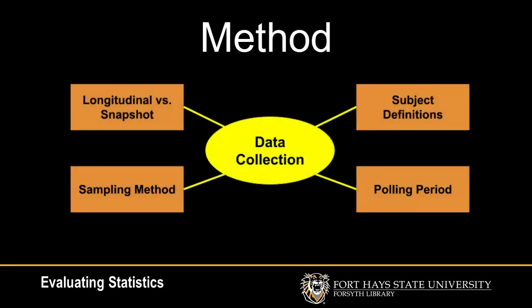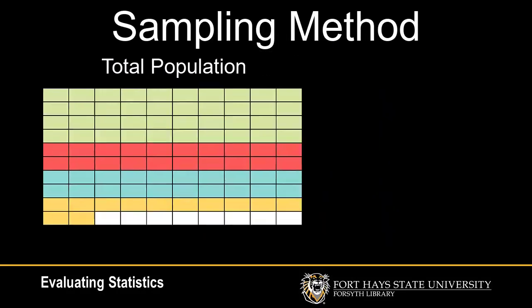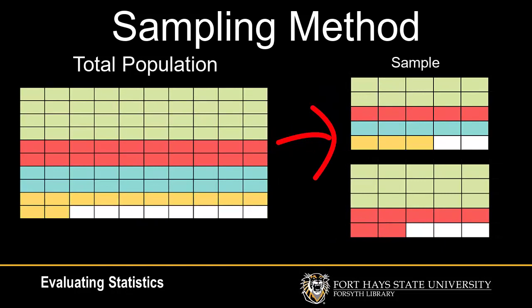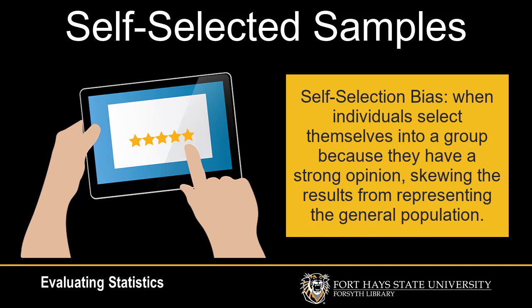The next step in evaluating statistics is looking at how it was created. Remember, all statistics are created by someone counting something for a specific reason, and there are better ways to count than others. Start by looking at the sampling method of the statistics. Make sure the sample is an accurate representation of the population it claims to represent. Additionally, if the sample is self-selected, there is likely to be a bias in the results.